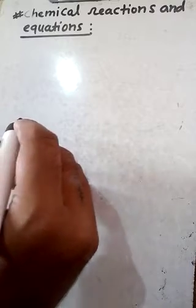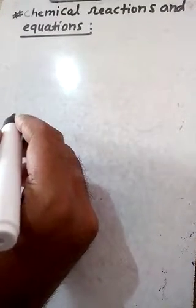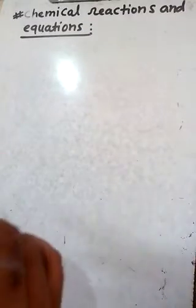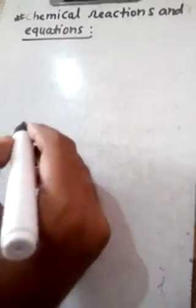We start the first chapter of chemistry of class 10th: chemical reactions and equations. In the previous class 9th we already read about the chemical formula of compounds, and now in this class we read about equations and reactions.